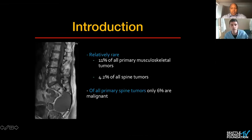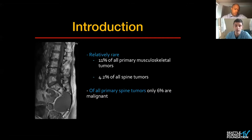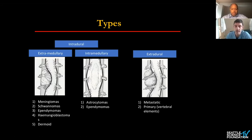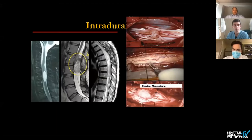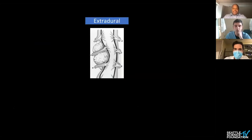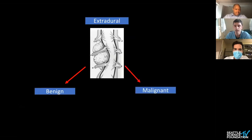As a brief introduction, primary spine tumors are relatively rare — only 11% of all primary musculoskeletal tumors, and 4.2% of them are all spine tumors. Of all primary spine tumors, only 6% are malignant. In terms of types, you can break them down into two major categories: intradural and extradural. The intradural can be extramedullary and intramedullary. These intradural tumors won't be the focus of this talk — whenever I see images like this, my first thought is consult neurosurgery. We'll really be focusing on the extradural tumors, which can be broken down into benign and malignant.